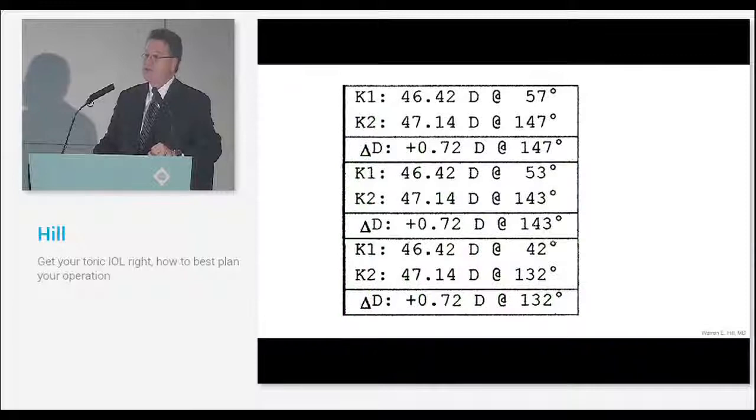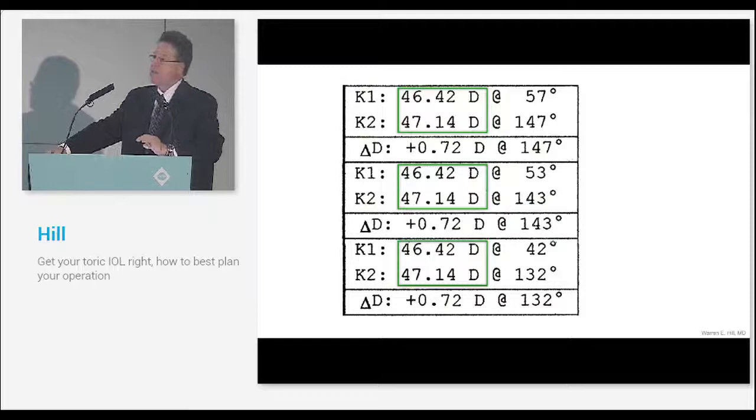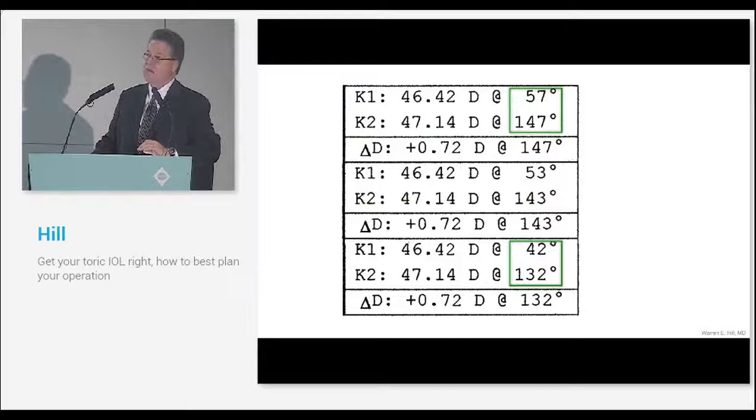Here's a thing that comes up all along. These are IOLMaster Ks. If you look, all three of these measurements are exactly the same. But remember, astigmatism is a vector, which means it has both magnitude and direction.